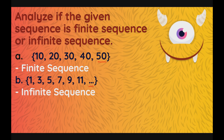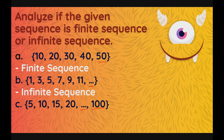For the third one, let's have 5, 10, 15, 20, and so on up to 100. This one is a bit tricky because it has ellipses and a last term which is 100. This is a finite sequence because even though it has ellipses, it also has a last term which means it has an ending. The ellipses here only tell us that there are numbers between 20 and 100 that are included in this sequence.